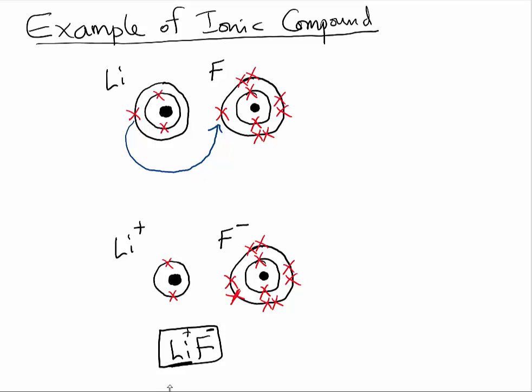So whenever you have a metal interacting with a non-metal, it is simply because the metal wants to lose electrons and the non-metal wants to gain electrons. That is an example of how ionic compounds are formed.